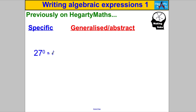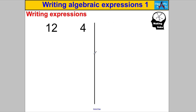Let me give you another example. If you know your indices, you know that 27 to the power of zero is 1. But someone might ask: is that something special about 27? No — so you write a more generalized statement using algebra: any number, let's call it A, to the power of 0 is 1. That's a much more useful statement because I can have any number in place of A, and I know that to the power of 0 is 1.